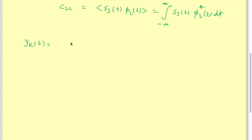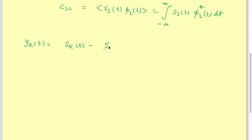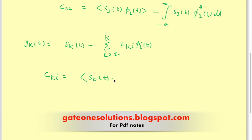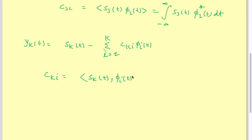In general, the k-th basis function is: gamma_k(t) = s_k(t) minus the summation from i=1 to k-1 of c_ki times phi_i(t), where c_ki is the inner product of s_k(t) and phi_i(t), i.e., their dot product integral.